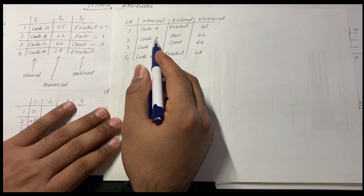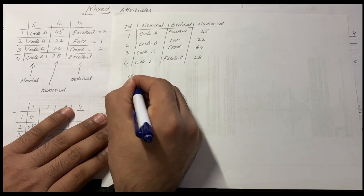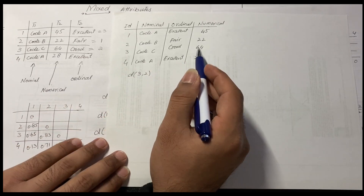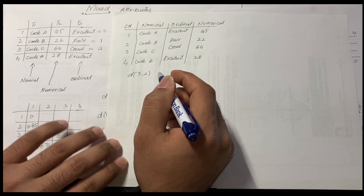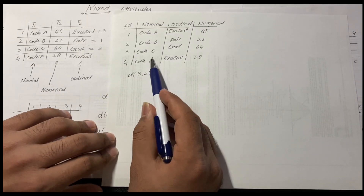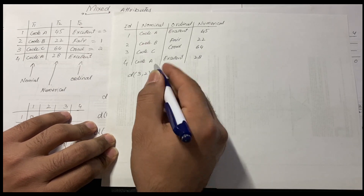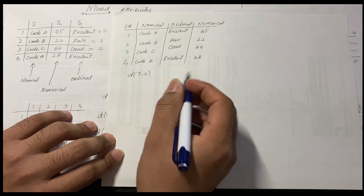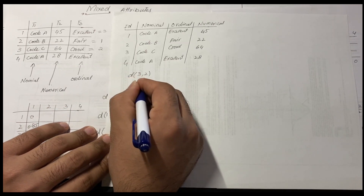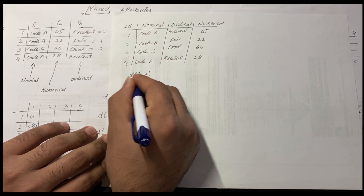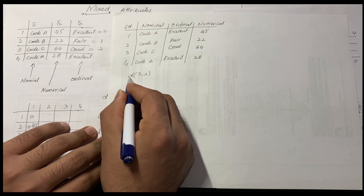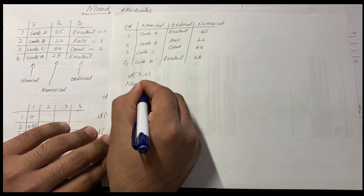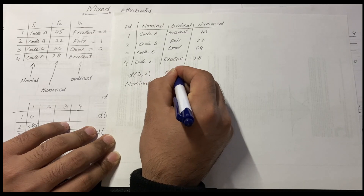Let's see another example. In an exam you may be asked to find the dissimilarity of objects 3 and 2 in mixed attribute. You don't need to do each preliminary step for nominal, ordinal, or numerical separately — you just need to apply the formulas directly and put in the values.